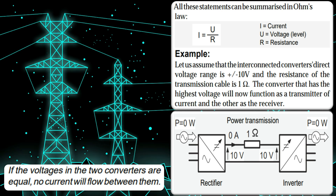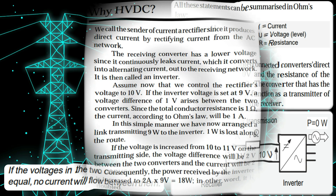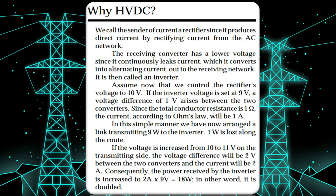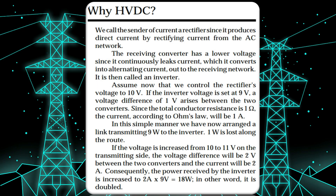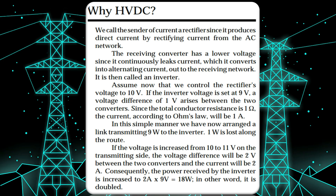In the vicinity of three-phase alternating current lines, magnetic alternating fields arise in the same order of magnitude as with other high-voltage lines. The walls of the converter halls shield against the electric fields generated by the particular plant components.